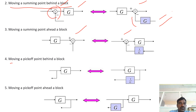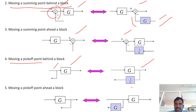Coming to moving a pick-off point, that means branch point, behind a block or after a block. If the branch point is behind a block and we need to move it to after the block, we add a 1/G block. Conversely, if we need to move a pick-off point ahead of the block — that means before the block — we add a G block.